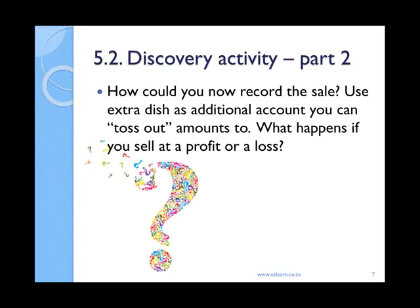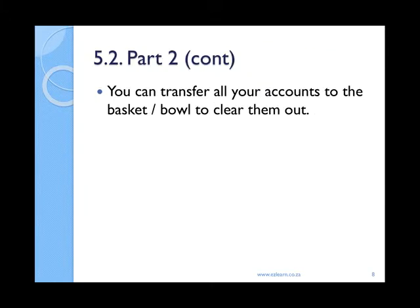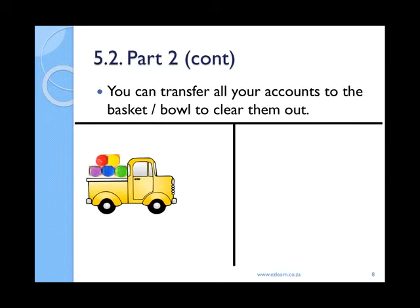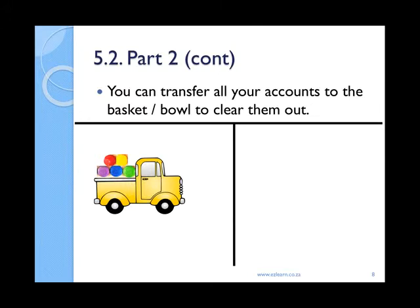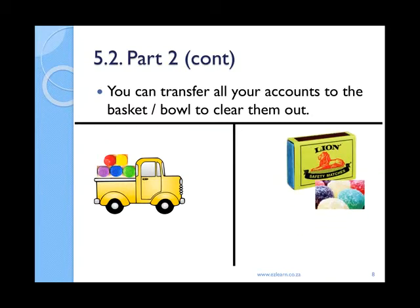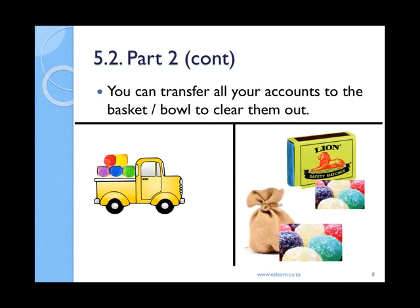Consider what will happen if you sell at a profit or a loss. What you can do is transfer all of your accounts to the basket or bowl to clear them out. You no longer have any vehicles, so you need to take your vehicle out of the vehicles account and instead put it on the debit side of this account. Your accumulated depreciation is also no longer relevant, so you need to clear it out of your accumulated depreciation account and show it over here. In addition, you have received some jelly tots — you need to show that as well. You would have debited your bank account, so you will need to credit this account.